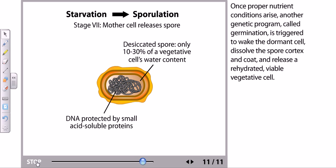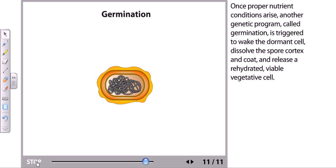Once proper nutrient conditions arise, another genetic program called germination is triggered to wake the dormant cell, dissolve the spore cortex and coat, and release a rehydrated viable vegetative cell. That's how sporulation is taking place, and this sporulation actually helps the cell to remain in the environment for a long time to increase the opportunity of surviving for bacterial cells.